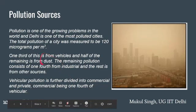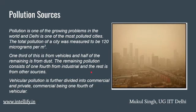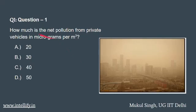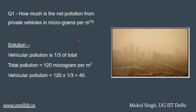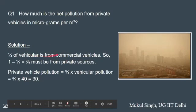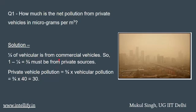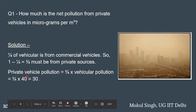तो जो vehicular वाला section है — 1/3 — वो further commercial और private में 1/4 और 3/4 के form में divided है। अब question देखते हैं। पहला question पूछ रहा है: how much is the net pollution from private vehicles in microgram per meter cube? Vehicular pollution 1/3 है total का, तो 120 का 1/3 is 40. अब हमें पता है कि vehicular का 1/4 comes from commercial, so the remaining 3/4 must come from private sources. तो private हो गया 3/4 of 40, that is 30.